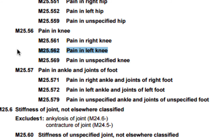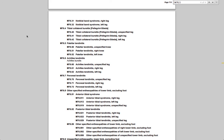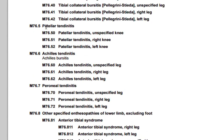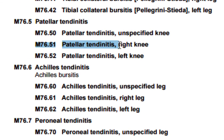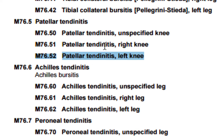One more thing to keep in mind: if it's possible to code for the specific condition that is causing the pain, you absolutely should do so. In this case, for example, if you determine that the patient is suffering from patellar tendonitis, you would select either M76.51, patellar tendonitis right knee, or M76.52, patellar tendonitis left knee, as the diagnosis code for this patient.